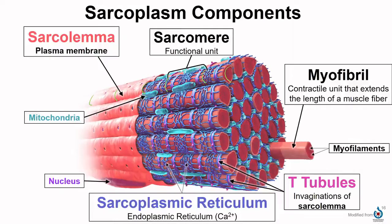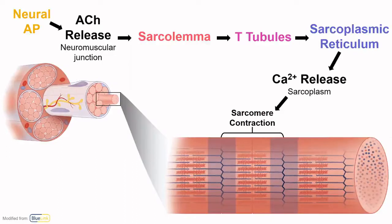The sarcolemma extends toward the center of a cell as T-tubules, seen here in pink. At the sarcolemma, we see these invaginations which are the T-tubules. The sarcoplasmic reticulum — this meshwork all around here — is equivalent to the endoplasmic reticulum. It's a fluid-filled system of membranous sacs that encircle the myofibrils, and in a relaxed muscle, the sarcoplasmic reticulum stores calcium. A neural action potential leads to the release of acetylcholine at the neuromuscular junction, which initiates the muscle action potential in the sarcolemma. This travels to all parts of the cell through the T-tubules, leading to the release of calcium from the sarcoplasmic reticulum. That calcium initiates a contraction of a sarcomere.